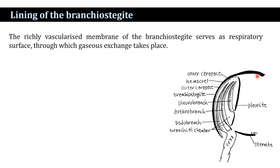The respiratory organs of the gills fall into three categories: branchostegites, epipodites, and the gills. The first category is the lining of the branchostegites. The richly vascular membrane of the branchostegites contains many blood vessels that serve as a respiratory surface through which gaseous exchange takes place.